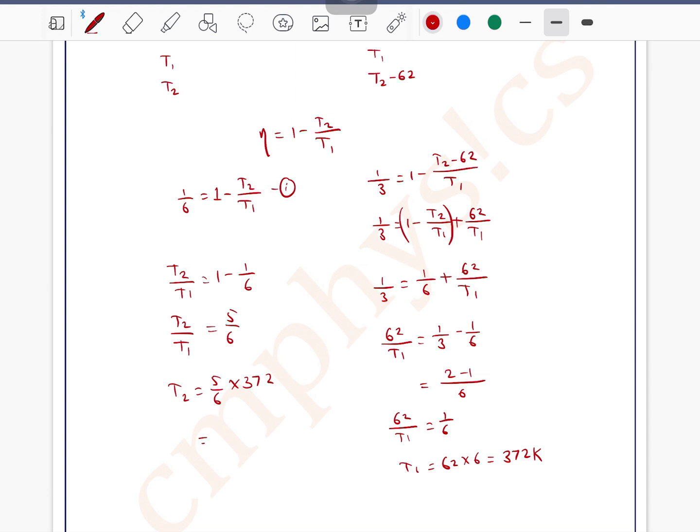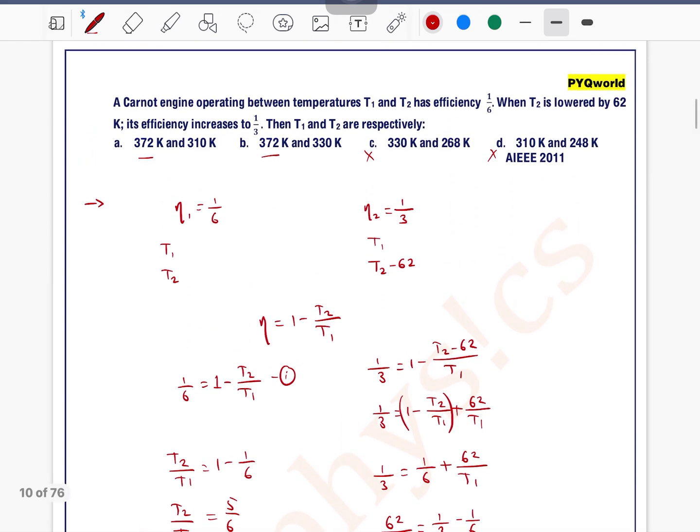So 372, 6 into 6, 36, 6 into 2 is 12. And how much will it be? 300 plus 10, 310 Kelvin. So 310 Kelvin means this one.